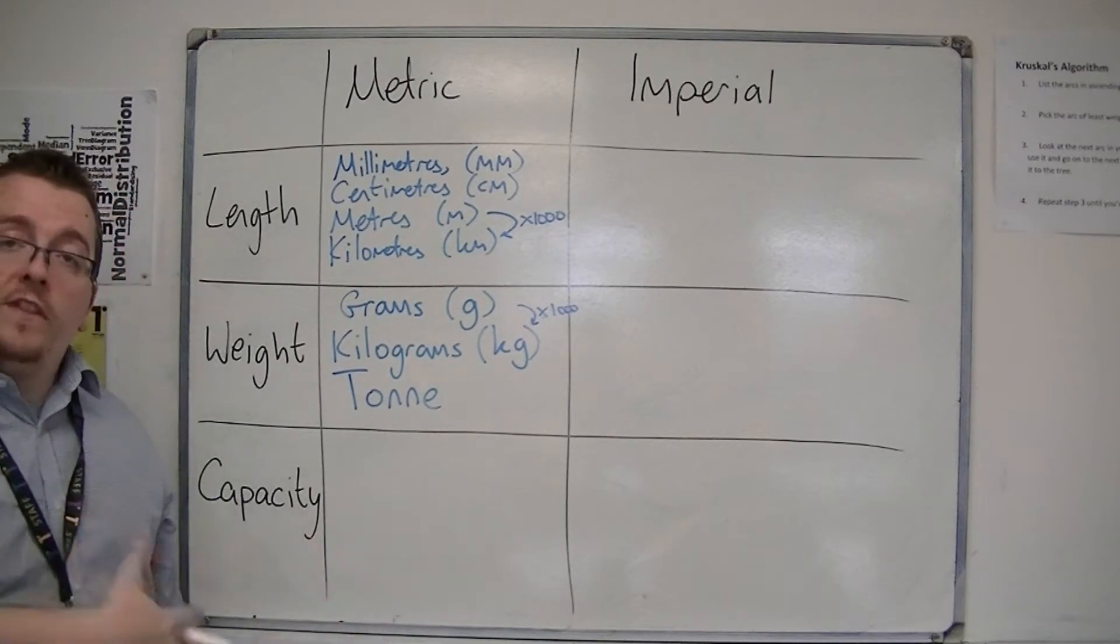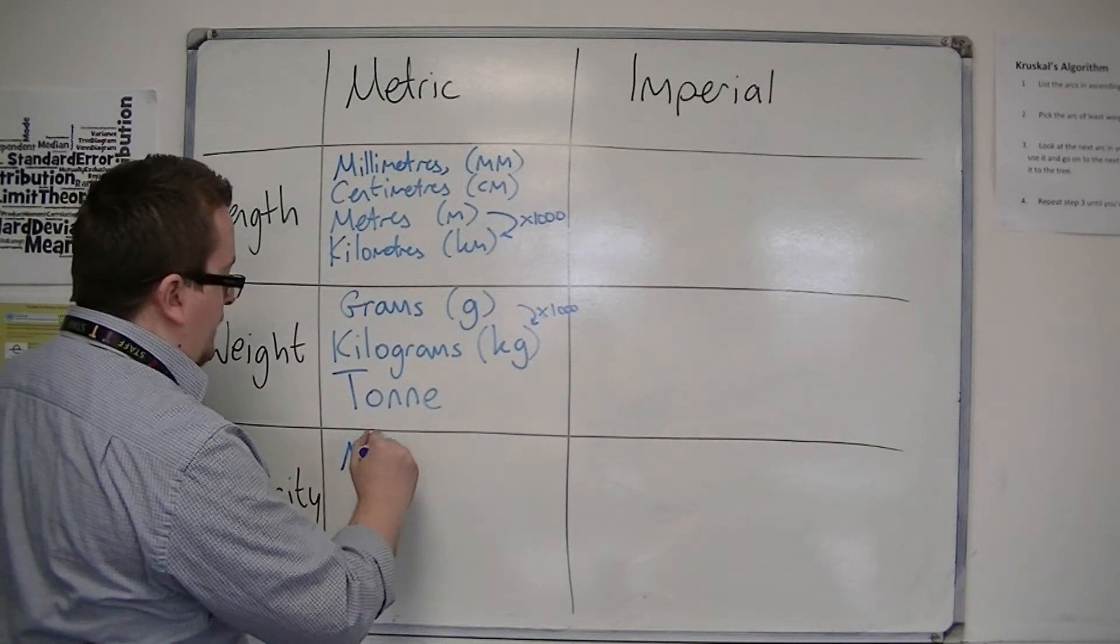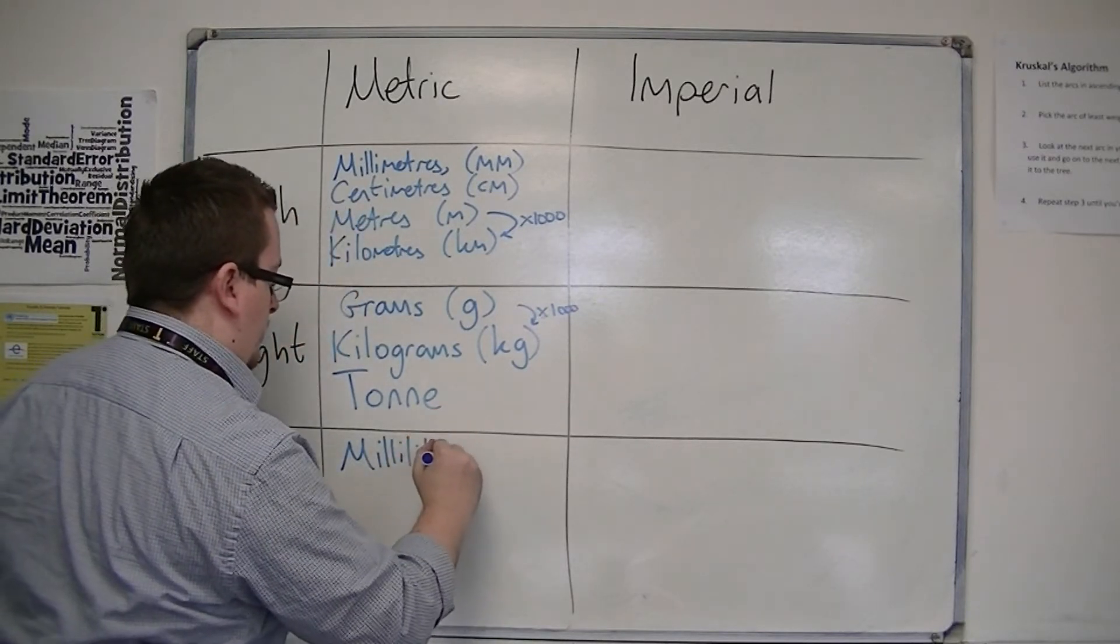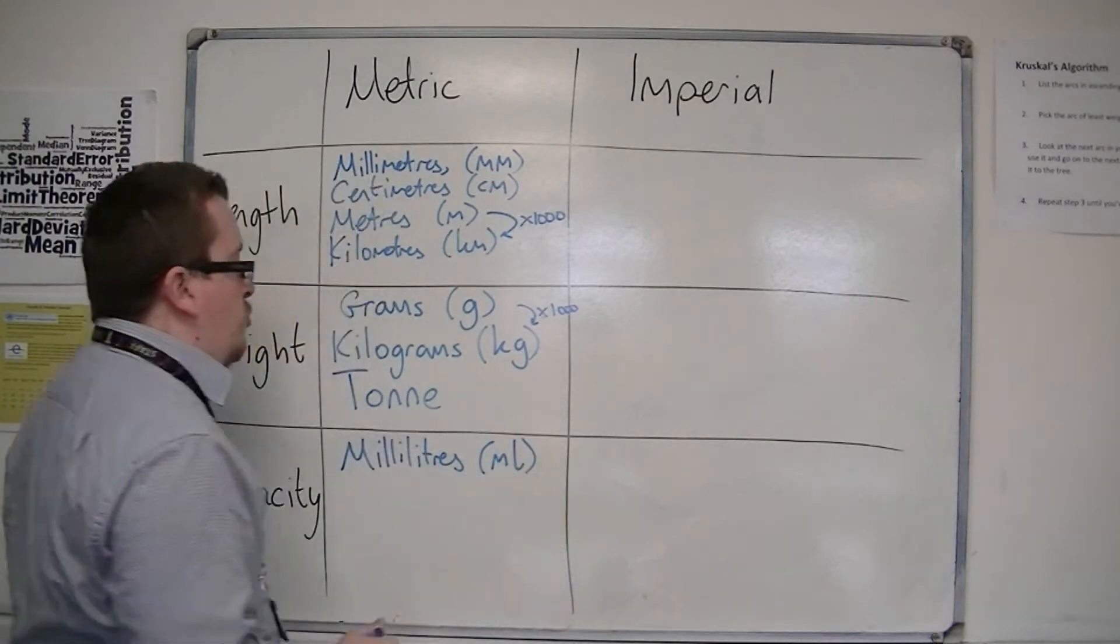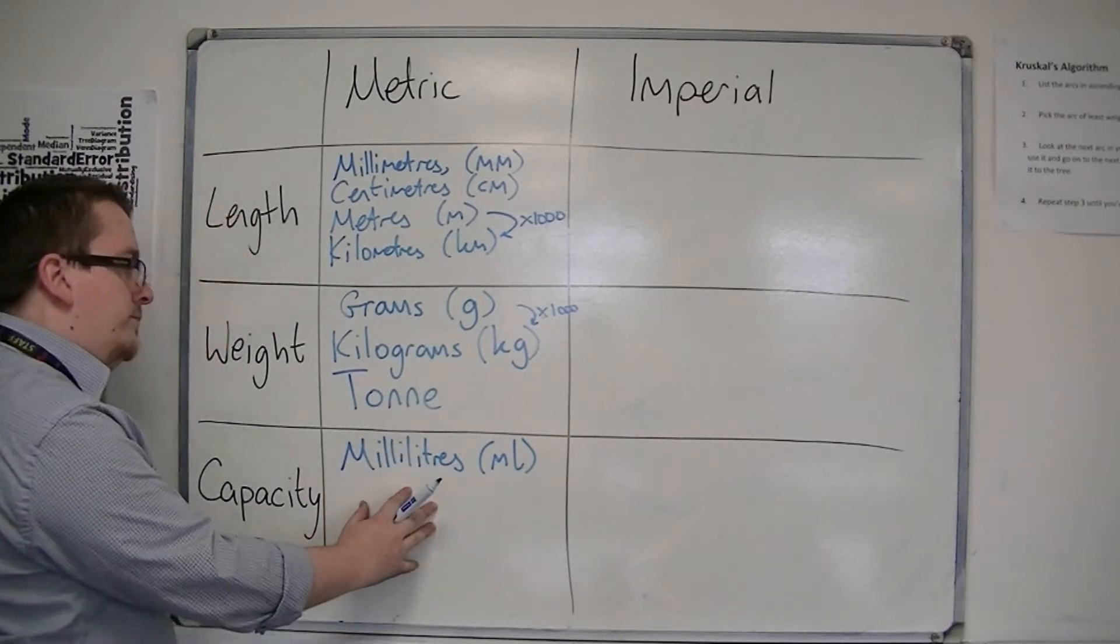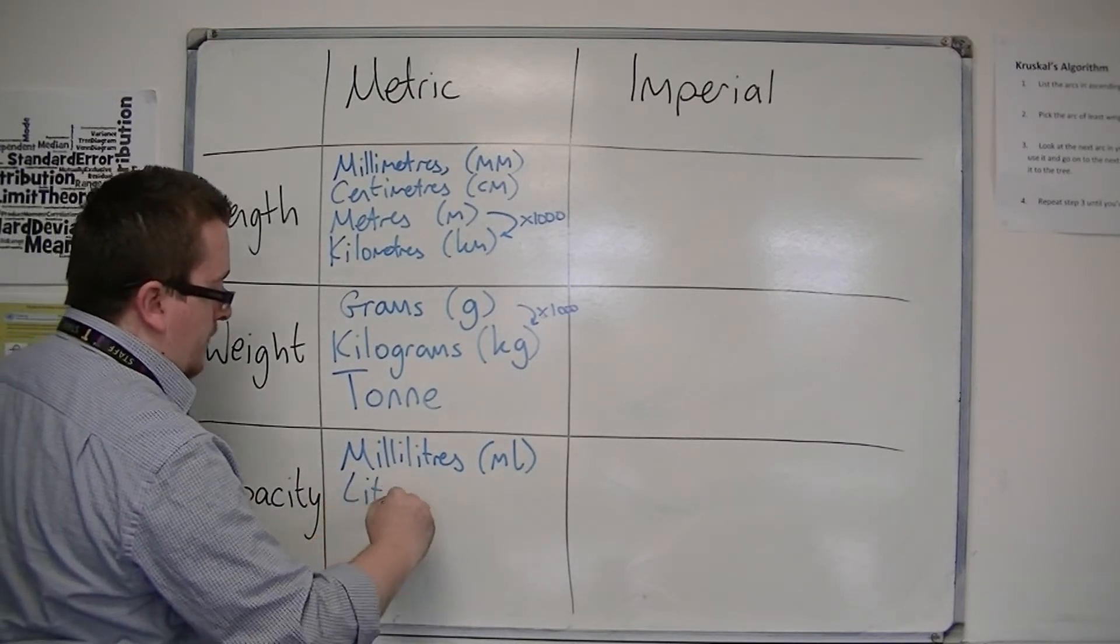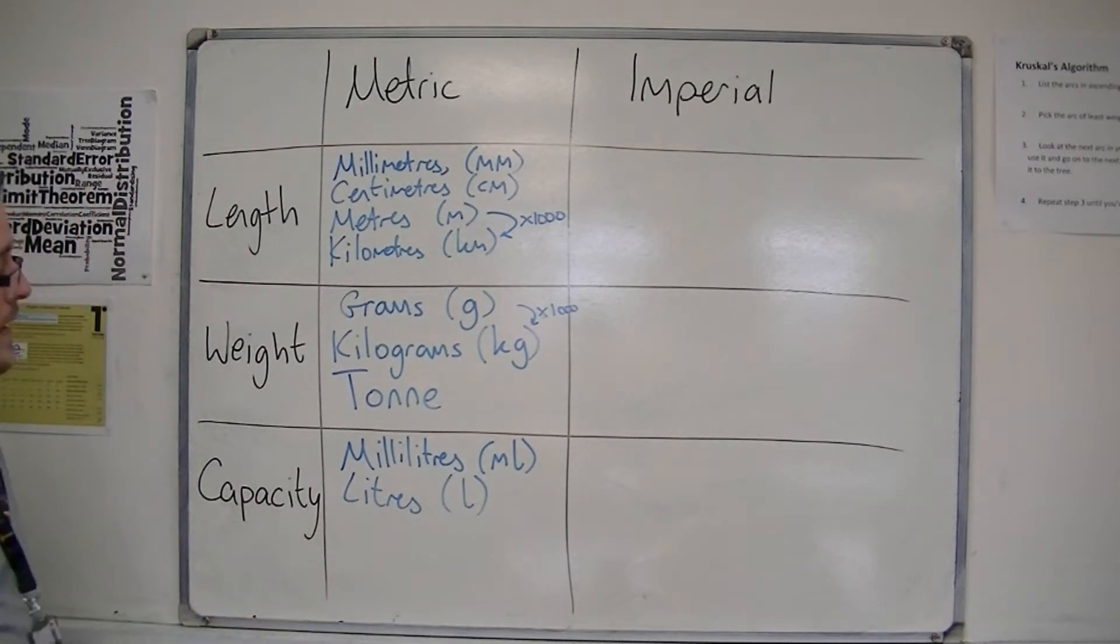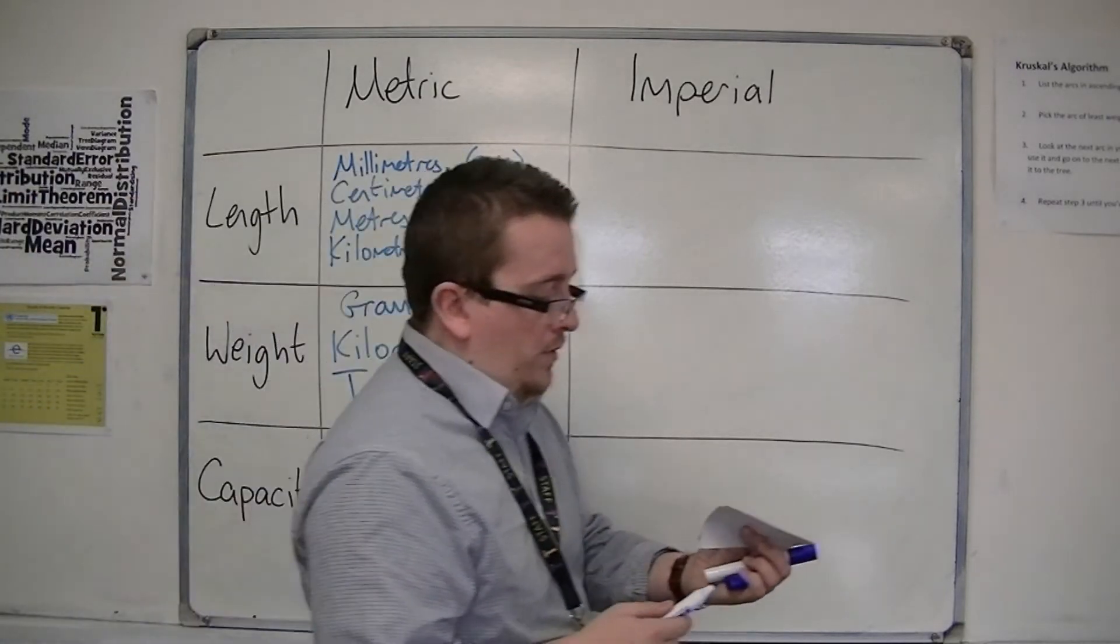Then you have capacity. So for this I'm talking about volume. You've got millilitres, ML as the abbreviation there for the units. Then you've got litres, which is just L. And there are 1,000 millilitres in a litre. And so they're usually the ones that we stick with for metric.